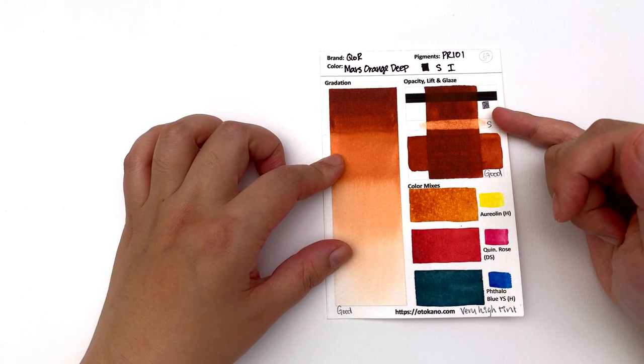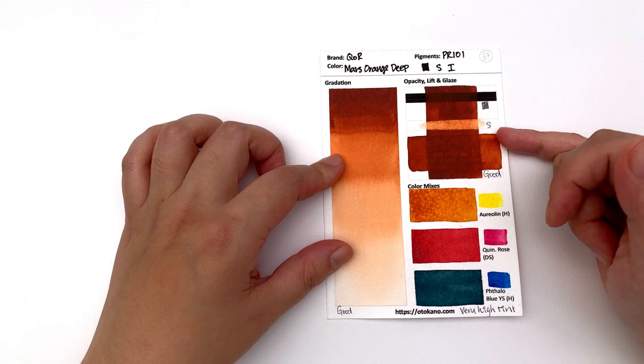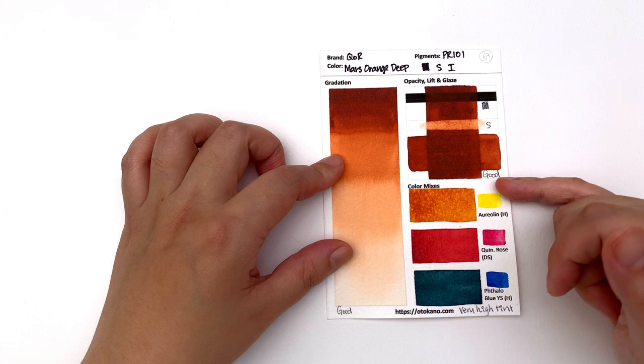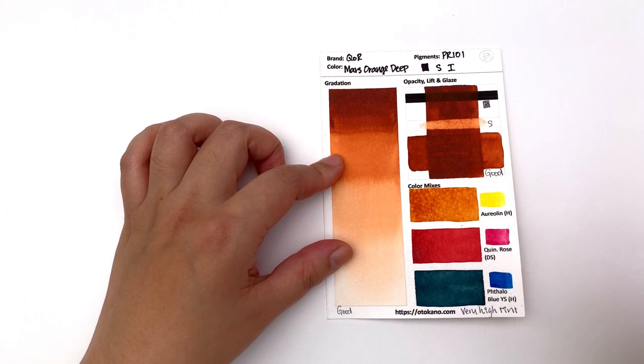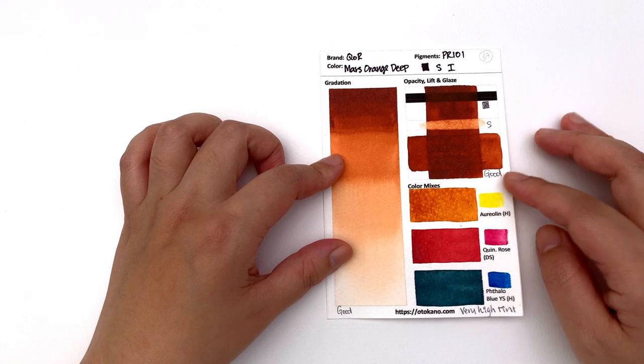It is classified as opaque and I would agree with that. It is classified as staining and again I would agree with that. It is a good glazer, although there's a tiny bit of lifting, but it's not too bad because it's a staining color. So you're going to have an easy time glazing.